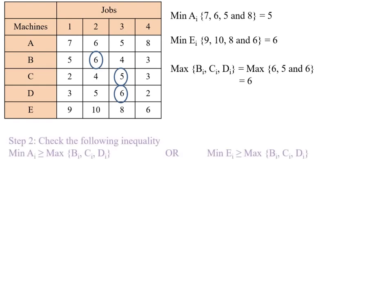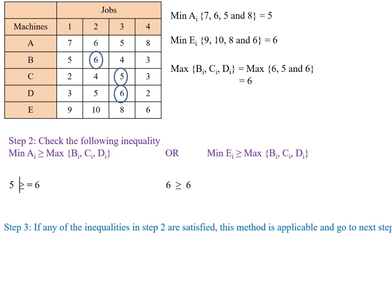Then we go to step 2: check the following inequality — minimum of A_i ≥ maximum of (B_i, C_i, D_i), or minimum of E_i ≥ maximum of (B_i, C_i, D_i). We know that minimum of A_i is 5 and maximum of B_i, C_i, D_i is 6. So 5 ≥ 6 is not satisfied — the first inequality is not satisfied. The second inequality is 6 ≥ 6, which is satisfied. So if any of the inequalities in step 2 are satisfied, this method is applicable and we go to the next step.